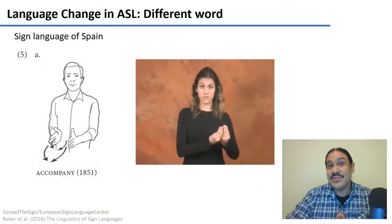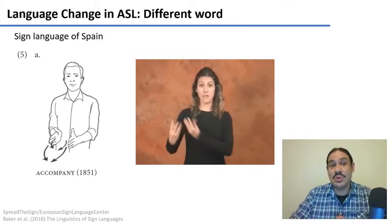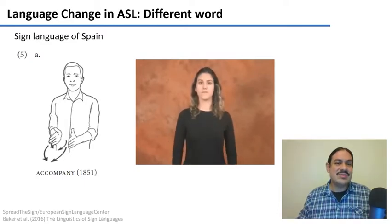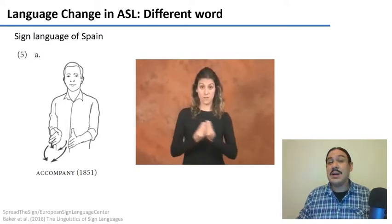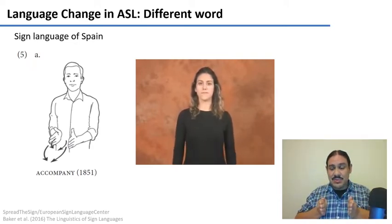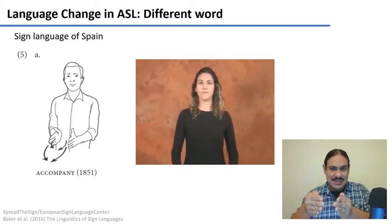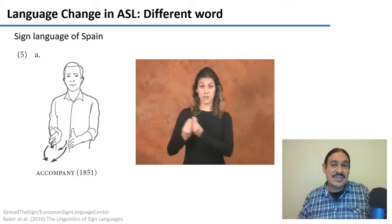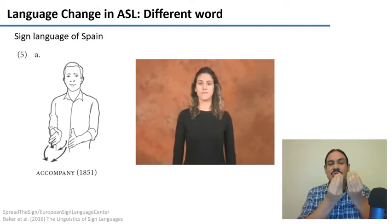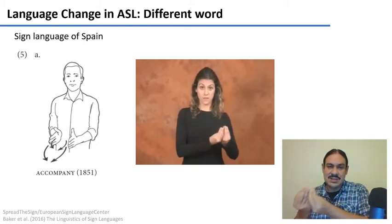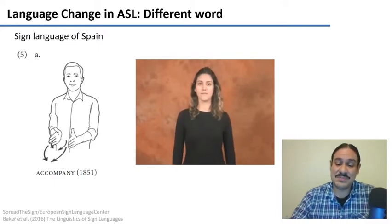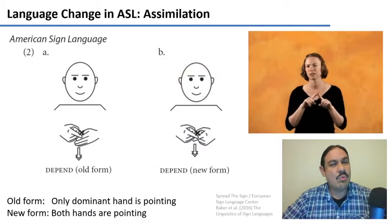From that information, the very first thing we can observe is that words change, just as in spoken languages. For example, drawings for the sign language of Spain indicate that the word 'accompany' was probably done in 1851 with fingers extended and a forward motion. 150 years later, the word has changed quite a bit — the fingers are no longer extended but bunched up, and the motion is sideways rather than front to back. So words can change just like in a spoken language.